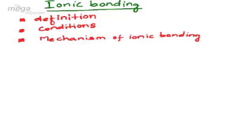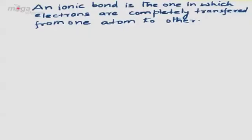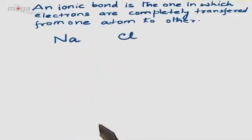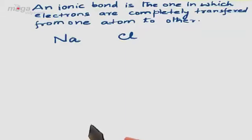We shall start with the definition of ionic bonding. Whenever two atoms undergo loss and gain of electrons during bonding, that will be called ionic bonding. Whenever an ionic bond is formed, electrons are completely transferred from one atom to the other. The logical approach towards bonding is to increase stability, which can be achieved by decrease of energy or by attaining the inert gas configuration, that is NS²NP⁶.